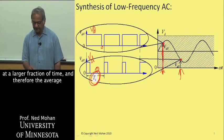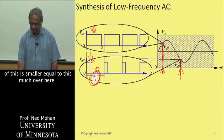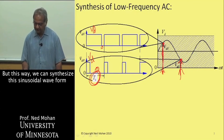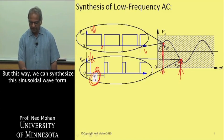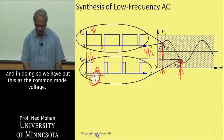Therefore, the average of this is smaller, equal to this much over here. This way, we can synthesize this AC waveform. In doing so, we have put VD over 2 as the common mode voltage.